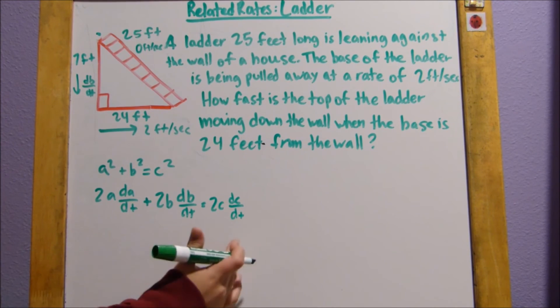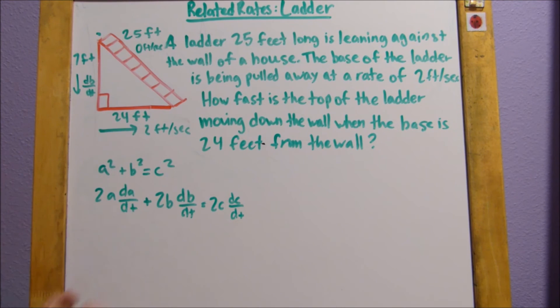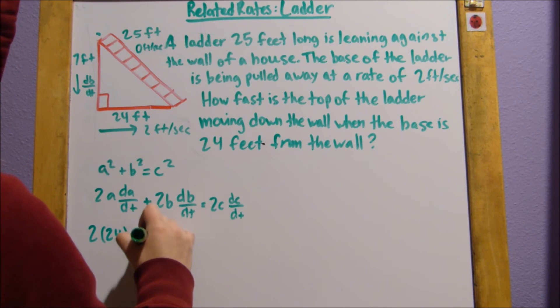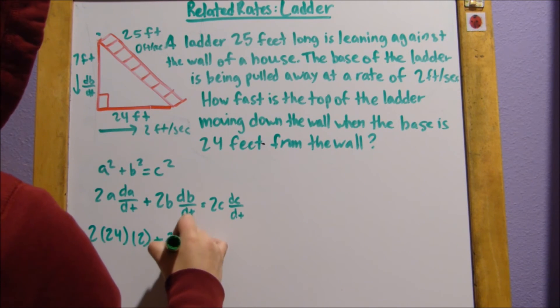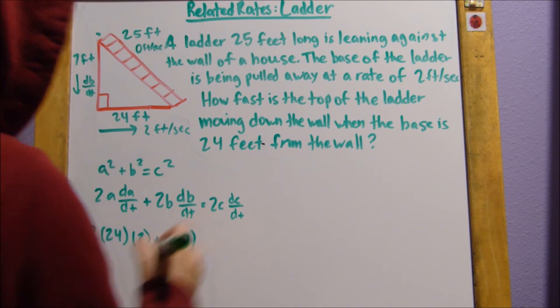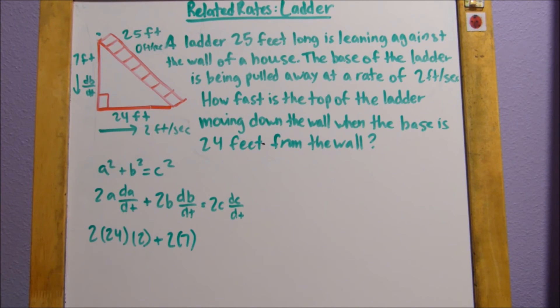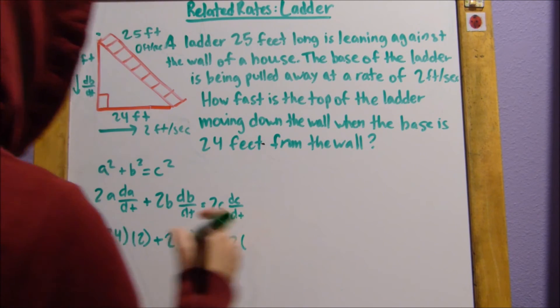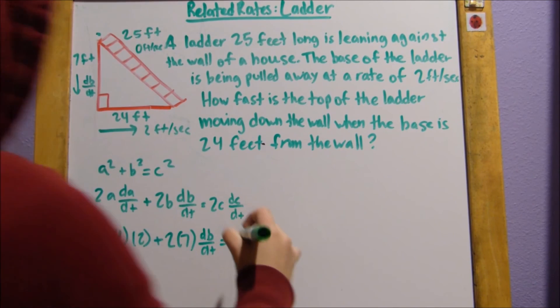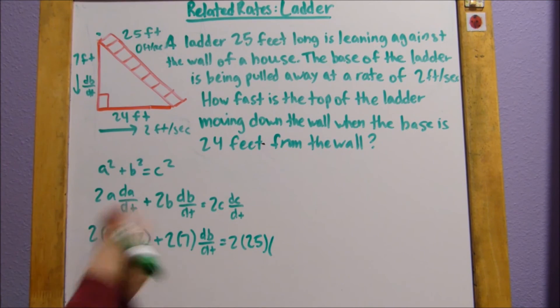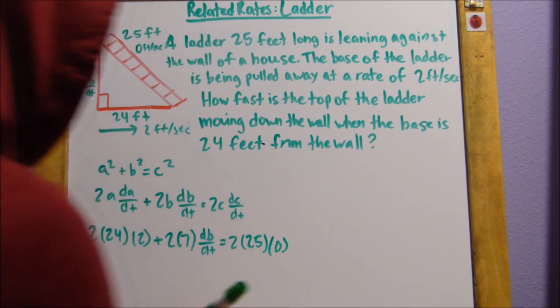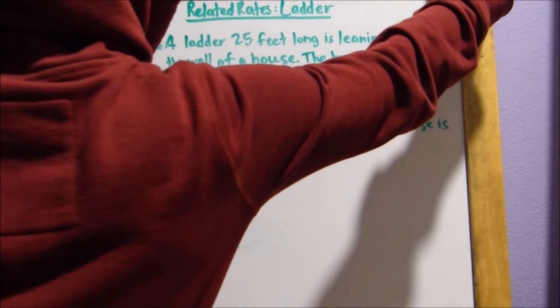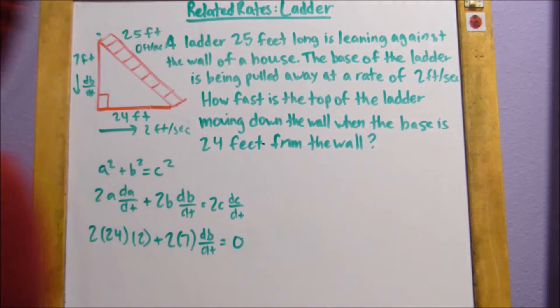So, now that you've derived it, you can plug in all these numbers that we figured out or were given. So, 2 times, let's call this side length A, 2 times 24 times 2 plus 2 times B, 7, times, we don't know what dB/dt is, we're solving for it, so let's just leave it as dB/dt. Equals 2 times C, our hypotenuse, 25, times the rate. Our rate is 0. So, really this entire half just turns to 0.